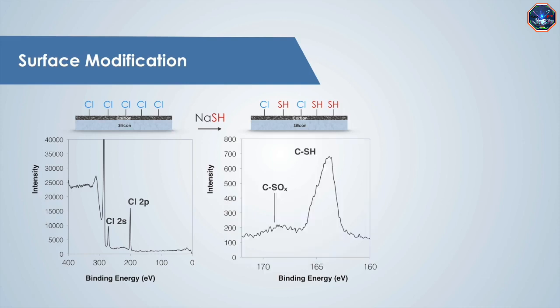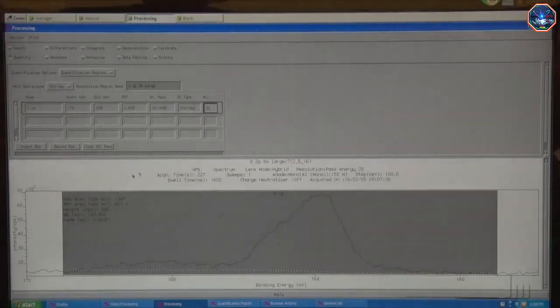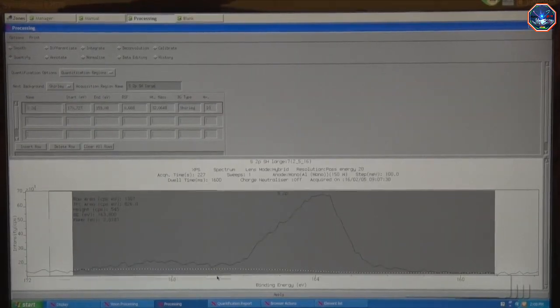We can also take high-resolution scans for the elements of interest in order to understand the surface chemistry even better. If we take a closer look at the sulfur 2p peak, we can see that it is actually composed of two components. The larger peak at lower binding energies is due to unoxidized sulfur atoms, while the smaller peak at a higher binding energy is due to sulfur atoms that have been oxidized. In order to determine how much of each form of sulfur is present, we will need to do some peak fitting within the analysis software.